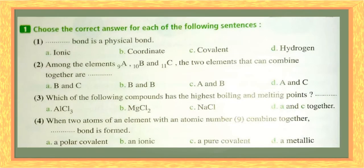Question number one says that a bond is a physical bond. We have two kinds of bond: physical and chemical. Each one depends on the kind of attraction or behavior. We have a physical bond — the hydrogen bond is a physical bond — but all others are an ionic bond.